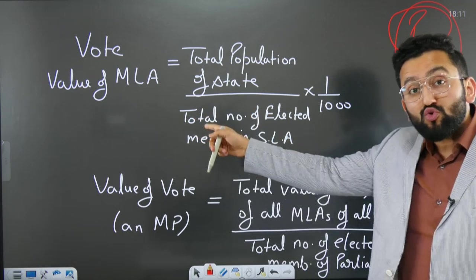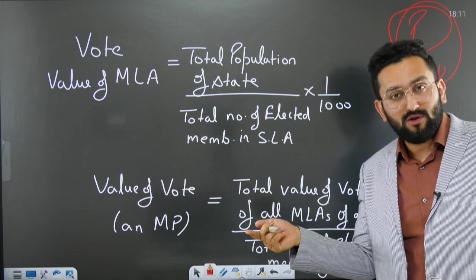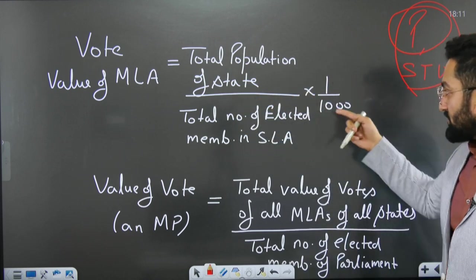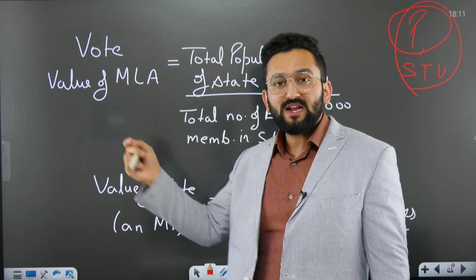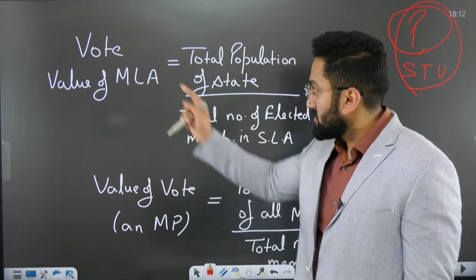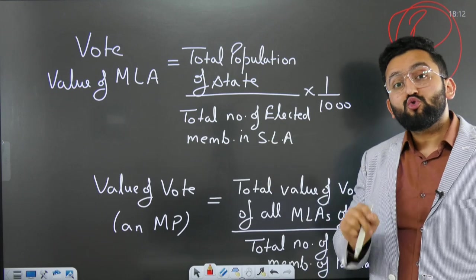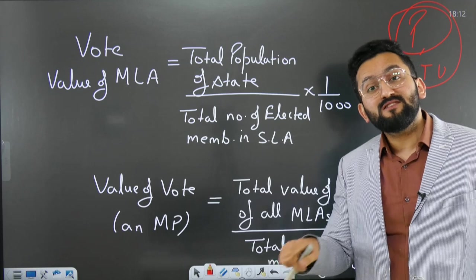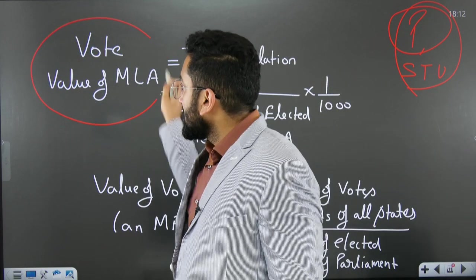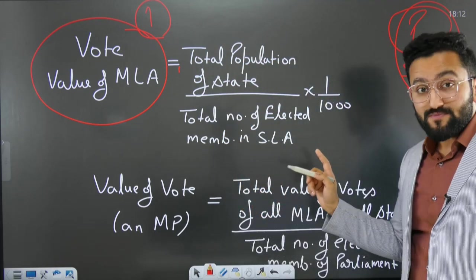For example, for an MLA of UP: total population of UP divided by total elected MLA seats (say 404), multiplied by 1/1000. For an MLA of Andhra Pradesh: total population of Andhra Pradesh divided by total elected MLA seats in the Andhra Pradesh legislative assembly, multiplied by 1/1000. This way you find the vote value of one MLA from any state.